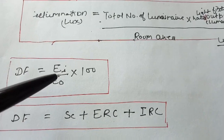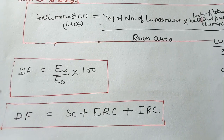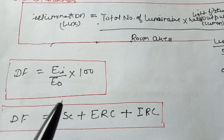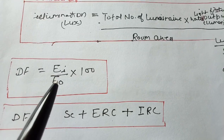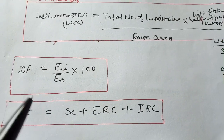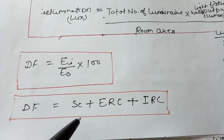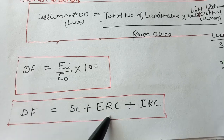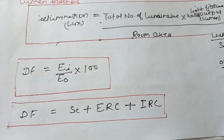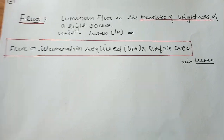We also use illuminance for calculating the daylight factor, which is illumination inside divided by illumination outside. The daylight factor is also equal to the sky component plus the external reflected component plus the internal reflected component. We will discuss daylight factor in more detail later.